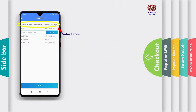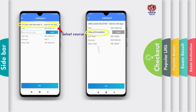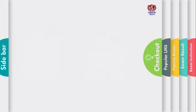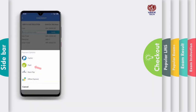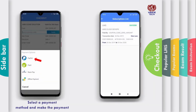Select a course and apply a coupon code to get a flat percent off based on the coupon. Proceed to payment, select a payment method, and make the payment. After successful payment, the courses are displayed in the subscriptions list.